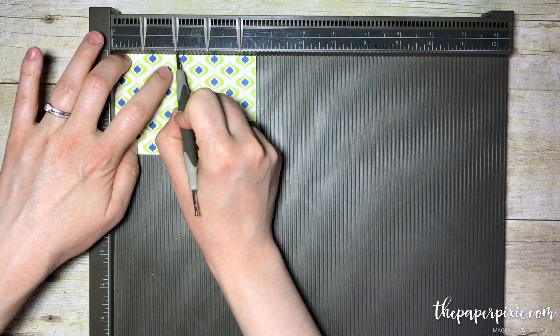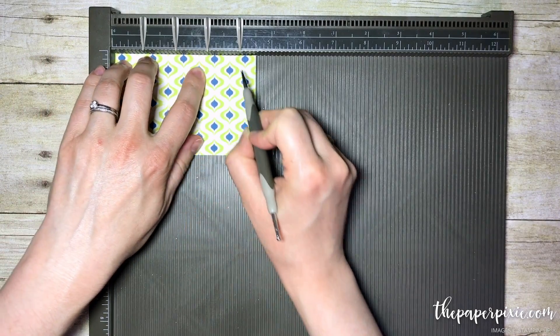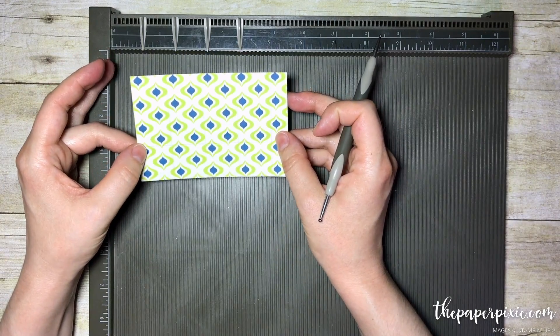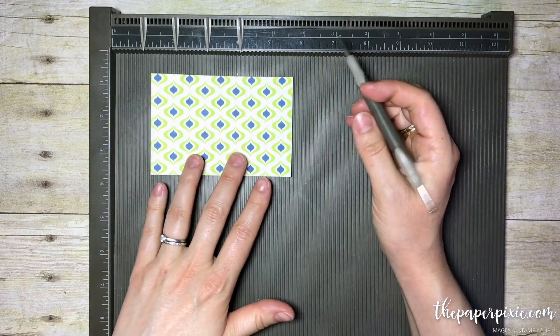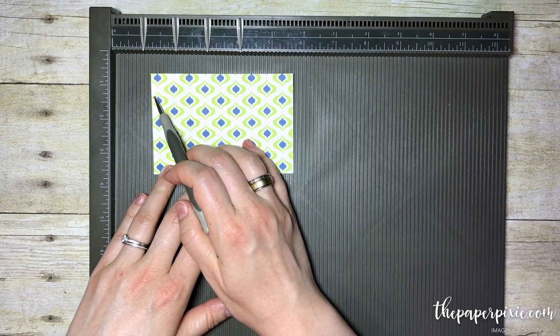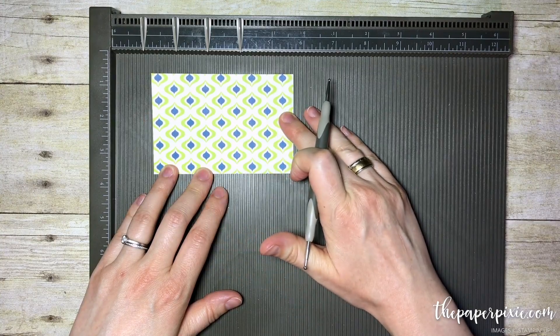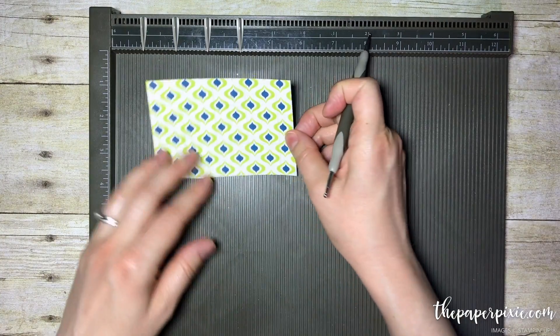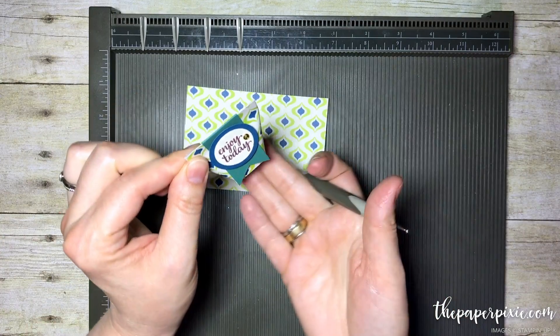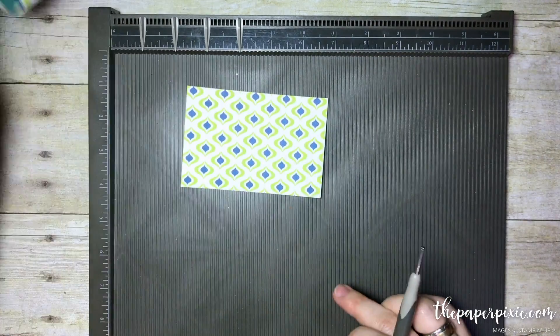We're going to score it at 1, 2, 3, and 4. Since this paper pattern is somewhat directional, if you did have a paper that was directional, you want to make sure that your up and down direction is along the 4.5 inch side, because that direction is going to be this direction of the box.